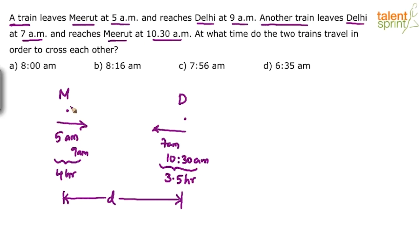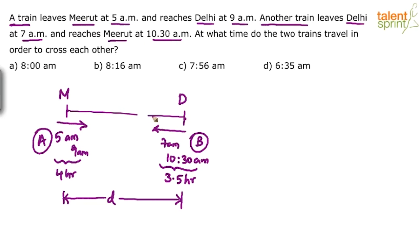One important point to understand: looking at the starting times, train A started at 5 am and train B started only at 7 am. Which means for the first two hours, only train A was travelling — from 5 am to 7 am, no other train was travelling. Since train A takes 4 hours to cover the full distance D, in two hours it definitely covers half the distance, D/2.